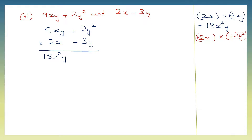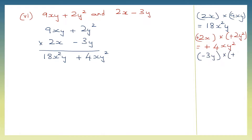Now let's multiply 2x into plus 2y squared. Both are plus, so plus into plus is plus. 2 into 2 is 4. x into y squared will be xy squared. So I have plus 4xy squared. Now we'll go to minus 3y and 9xy: minus 3y into plus 9xy. First the signs: minus into plus is minus.